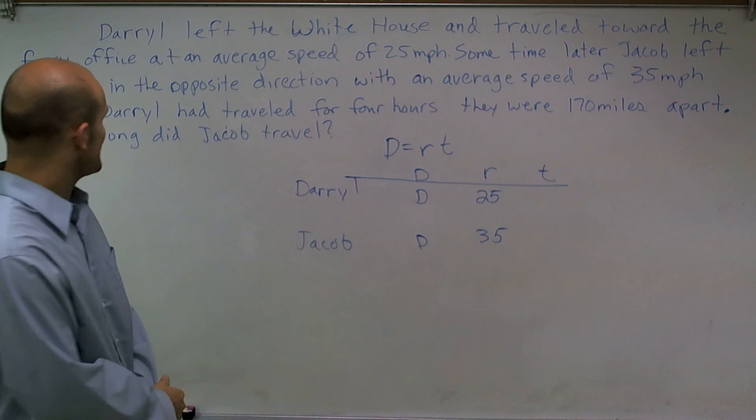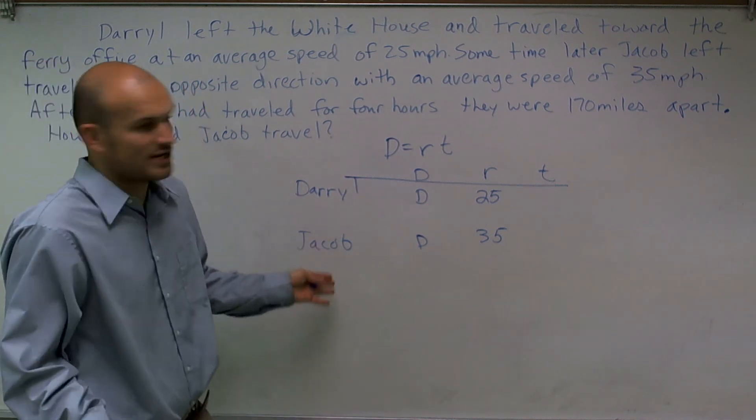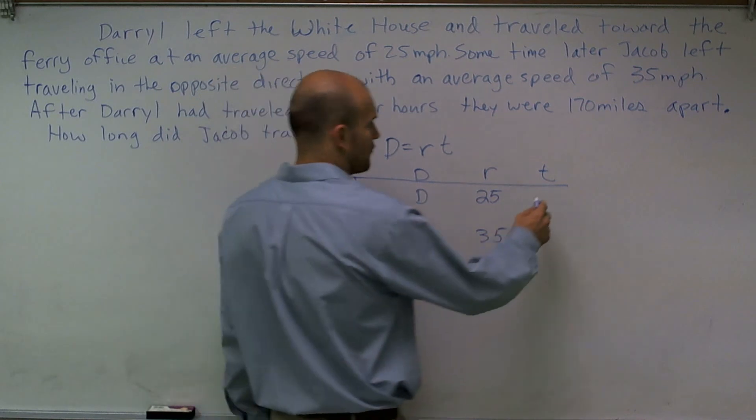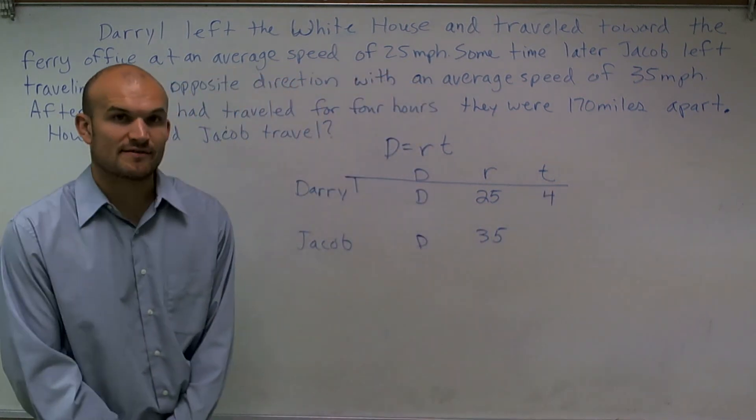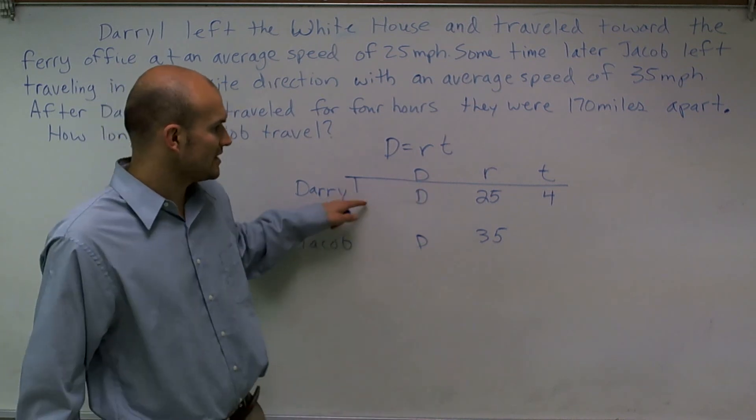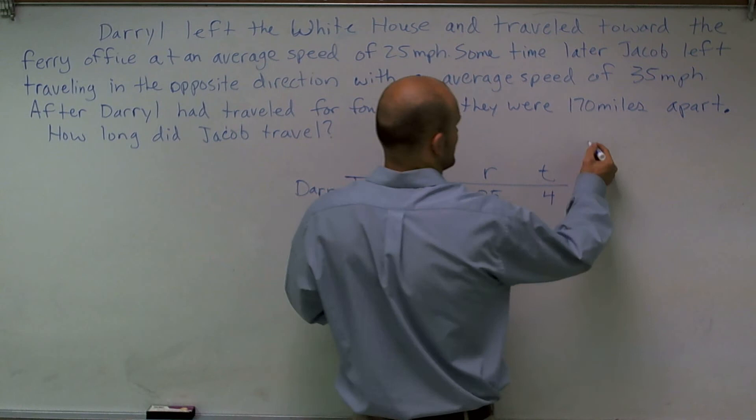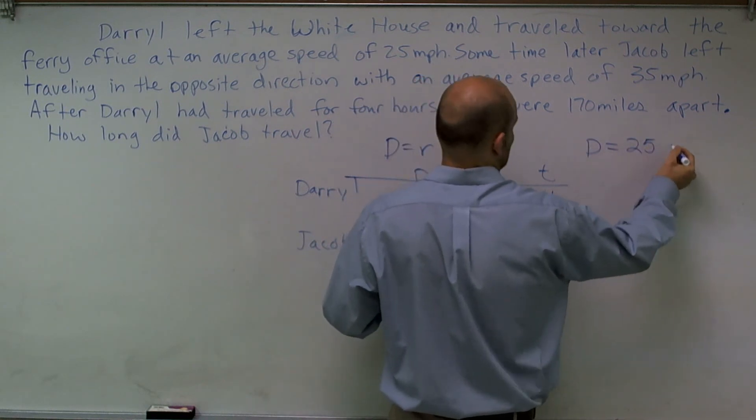Now, it says after Daryl traveled for four hours, they were 170 miles apart. So we don't know how far Jacob traveled, but after four hours, they were 170 miles apart. So automatically for Daryl, I have an equation. I have distance equals rate times time.